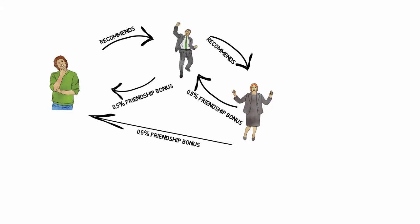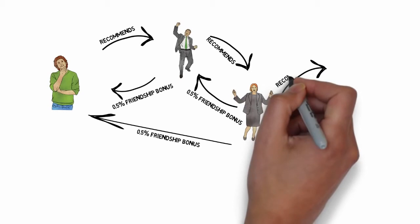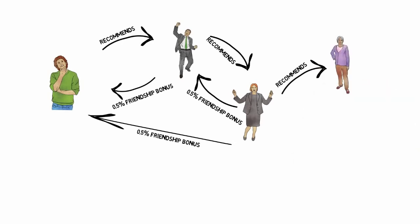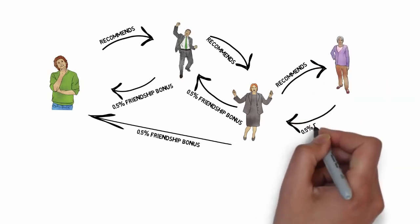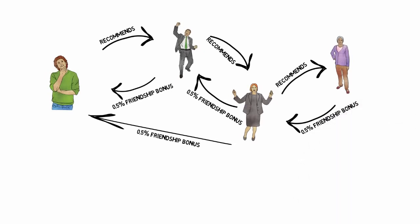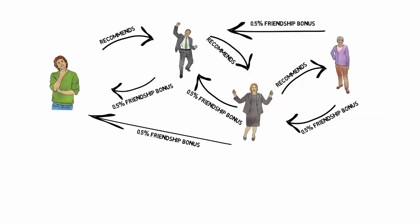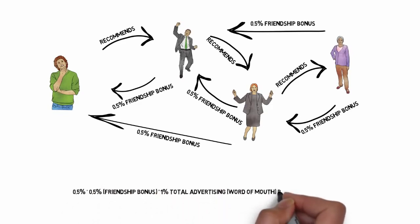Let's take it one step further. Your brother's mother-in-law decides to recommend her sister to Lyoness. What happens now? When she makes a purchase with a Lyoness merchant, her sister receives 0.5% as a friendship bonus. And your brother receives 0.5% as a friendship bonus. Do you know what your benefit from her purchase is, Adam? That's right. There isn't any friendship bonus for you, because Lyoness has already paid out the 1% that it sets aside for advertising. So, in that case, there isn't anything for you. But don't worry. The friendship bonus is just one out of 11 different ways to earn money from Lyoness. Do you understand how the friendship bonus works? Good.